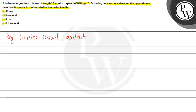For constant acceleration questions, all the kinematic equations are valid: v is equal to u plus at, s is equal to u plus half at squared, and v squared minus u squared equals 2as. These are all the equations we will use.